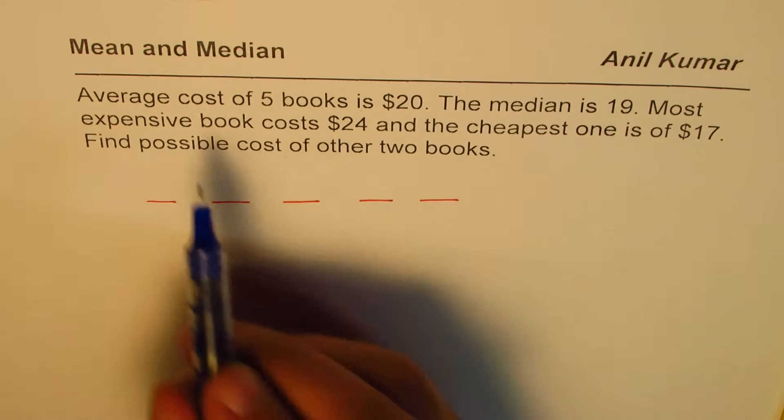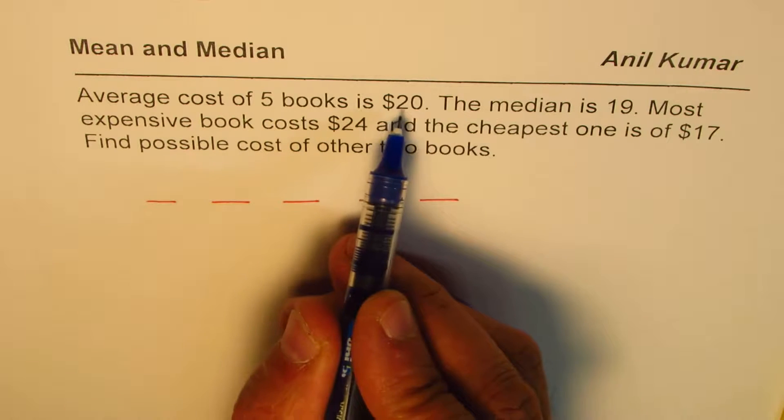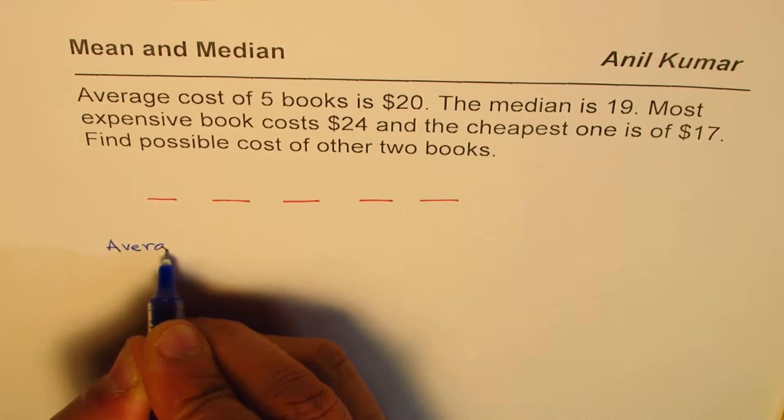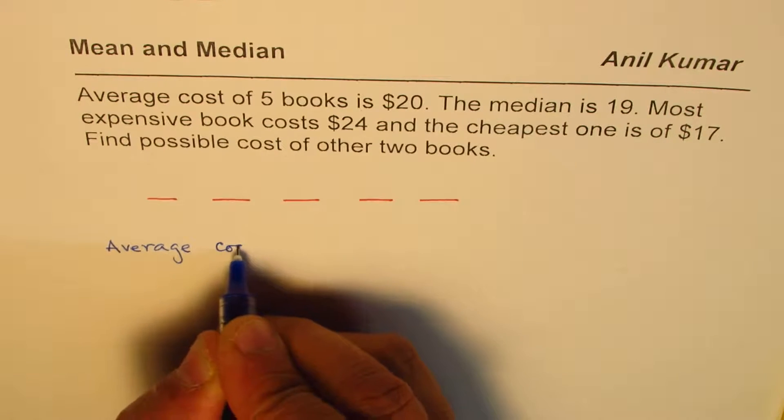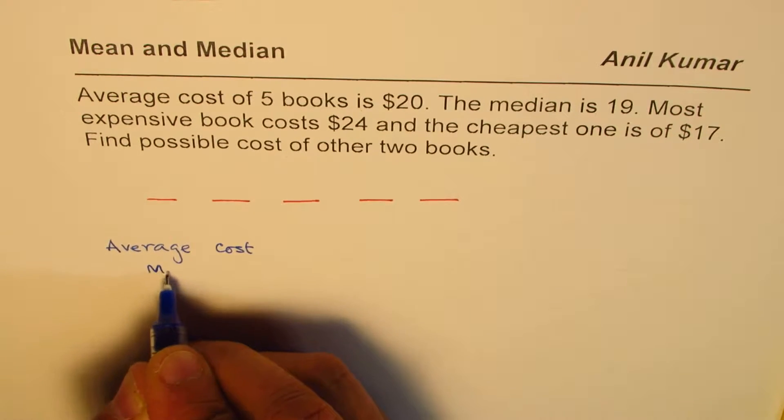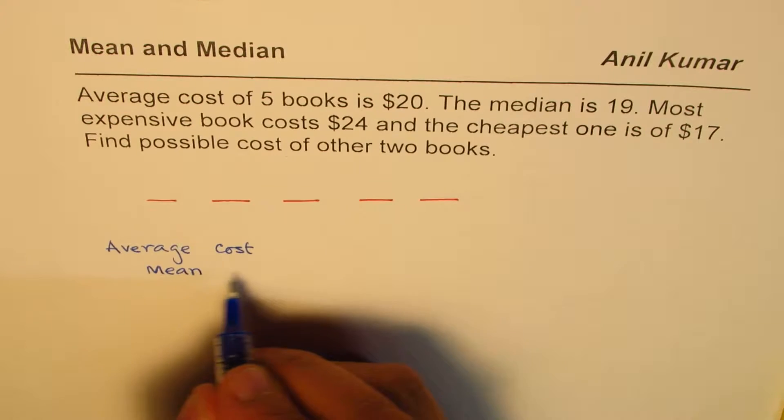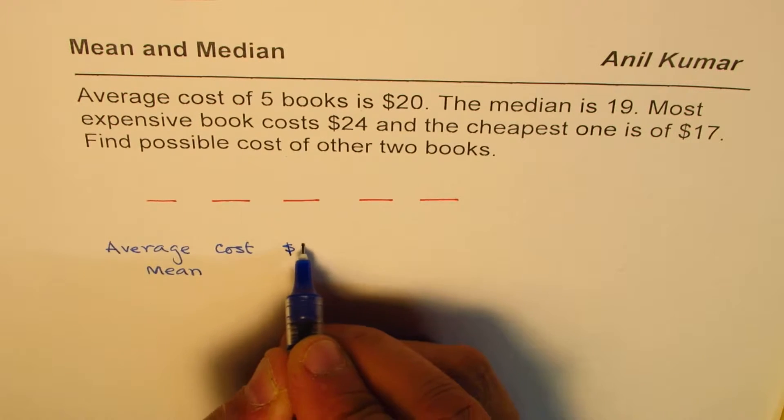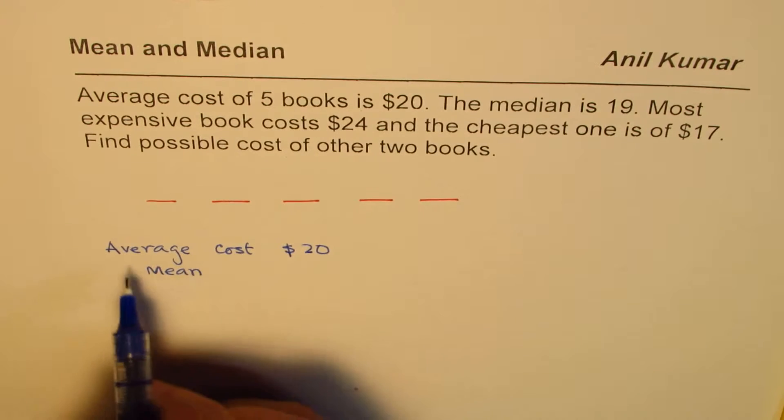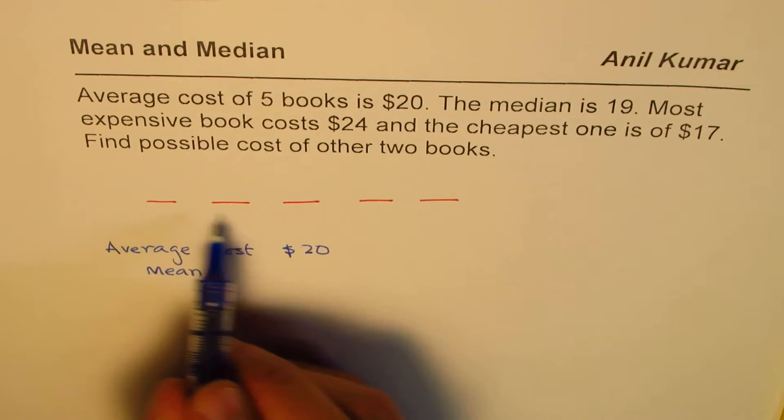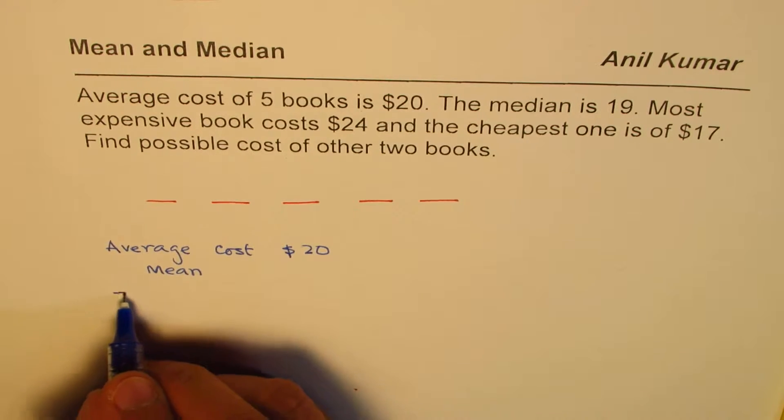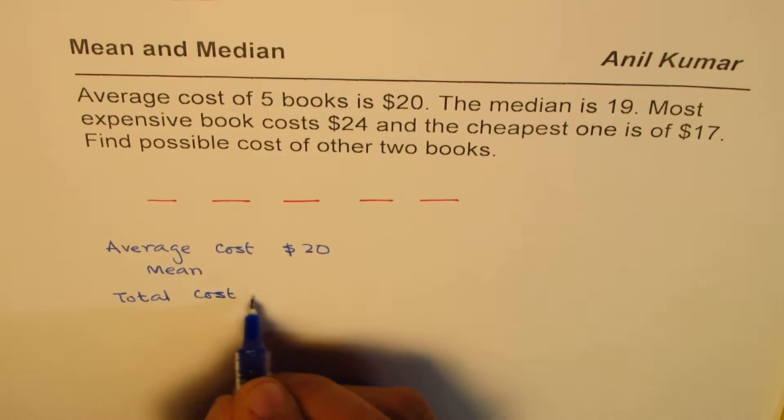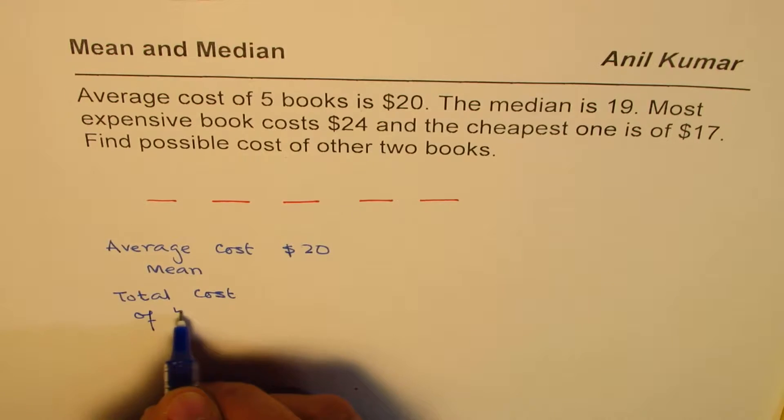And what are we given? Average cost of 5 books is $20, right? So average cost, which is also mean. Average cost is $20. So if average cost is $20 for 5 books, what is the total cost? Can you tell me? Of 5 books.